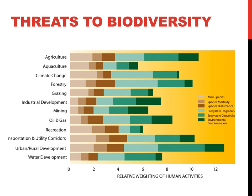Humans can threaten biodiversity — the diversity of life in an area — in many ways. Agriculture, aquaculture, industry, recreation, and mining are just a few examples. Conservation biologists play a large role in all these fields in an attempt to reduce the negative impact of humans on the environment.